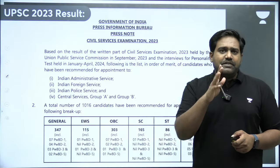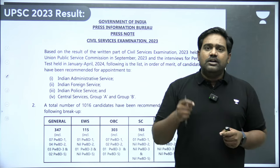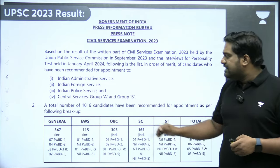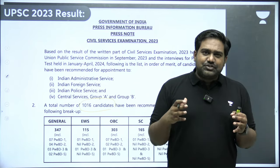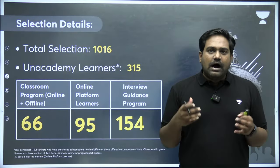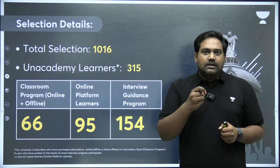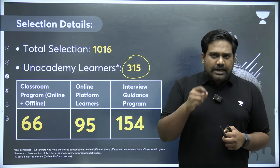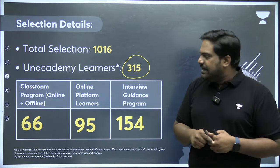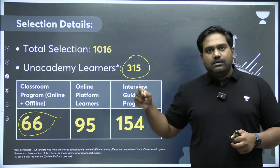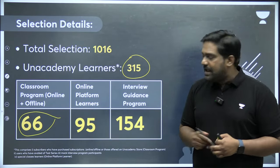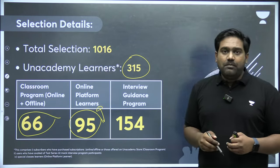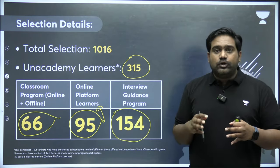Before we get into the topic, we have a big announcement. Today was a big day for 2023 civil services aspirants. UPSC has declared the final results and more than 1,000 candidates have made it to the top list. We are extremely glad to tell you that a number of toppers are from Unacademy's program — a total of 315 plus toppers were part of Unacademy's program in some way or the other. Around 66 were in our online-offline classroom program, around 95 were part of our online learning platform, and around 150 plus were part of our interview guidance program.